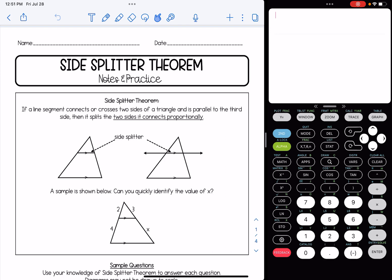If you look in these diagrams here, you can see that there are side splitters pointed out. It could be a line or a segment. Basically it's parallel to the third side, you can see those parallel markings, and it splits the two sides that it connects to proportionally.